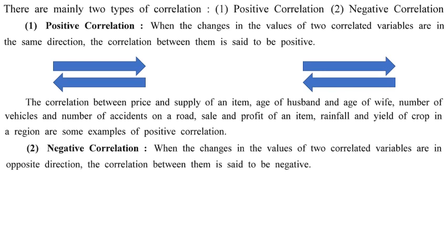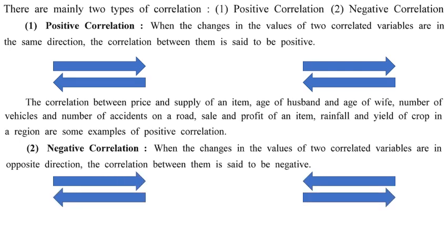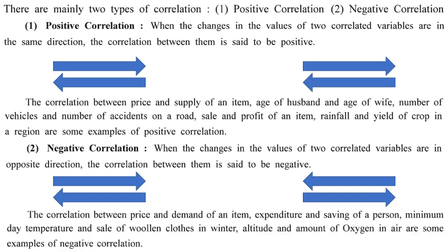Negative correlation occurs when changes in the values of two variables are in opposite directions — one increases while the other decreases. Examples include price and demand, expenditure and savings, and temperature versus woolen cloth sales: when temperature drops, woolen cloth sales rise, and vice versa.